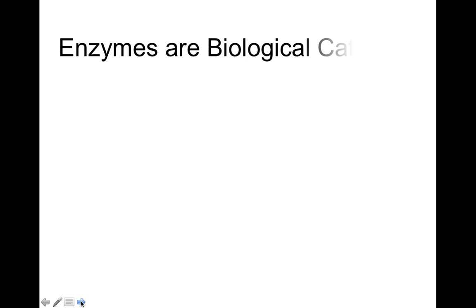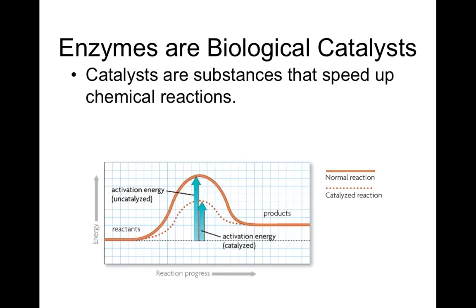Alright, next slide here. Alright, so enzymes are biological catalysts. Now we really have to figure out what the heck a catalyst is. So catalysts are substances that speed up chemical reactions. You're going to learn a lot more about them in chemistry next year. But what we're looking at here is we're looking at a chemical reaction. Alright, this is the energy of the reactants. This is the energy of the products. And in the middle, in order to make a chemical reaction go, you need to add some energy. We call that the activation energy.